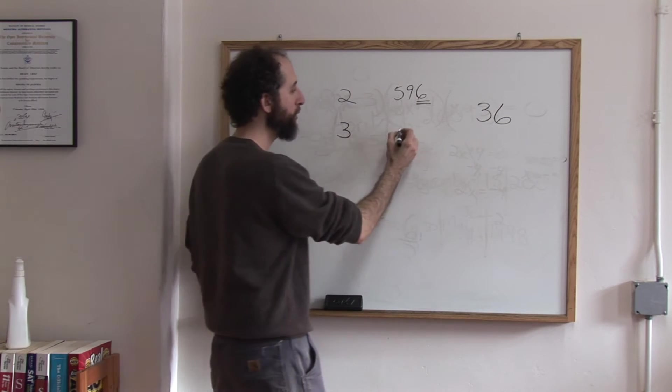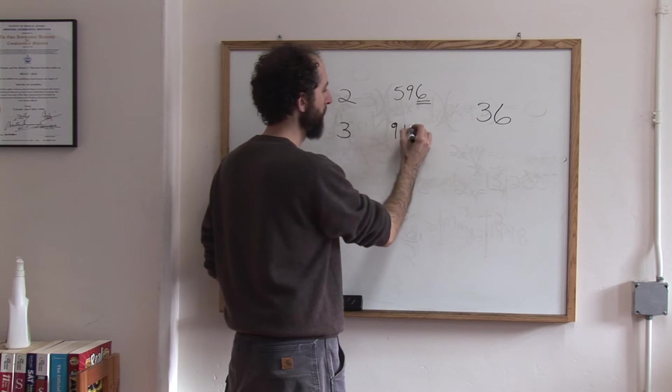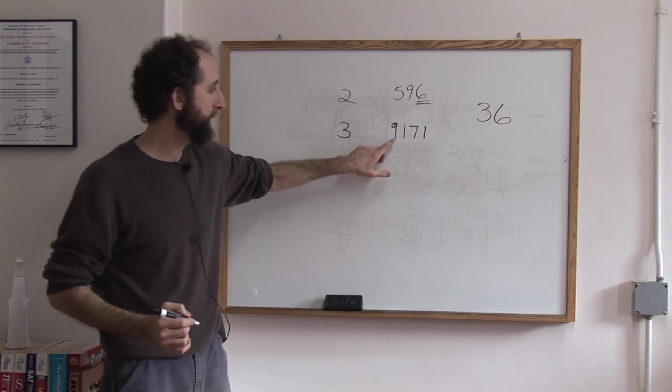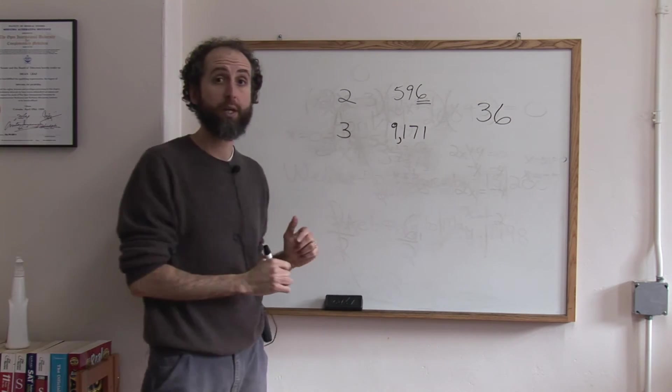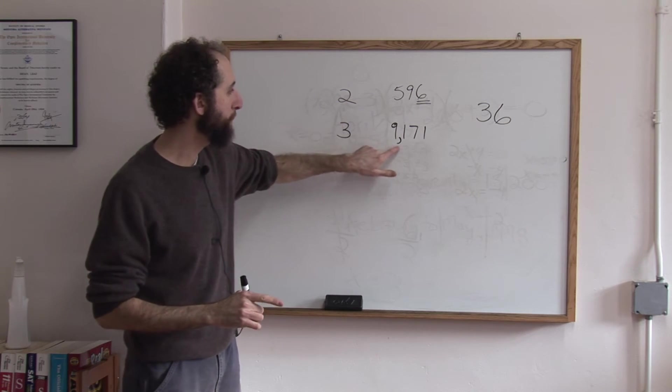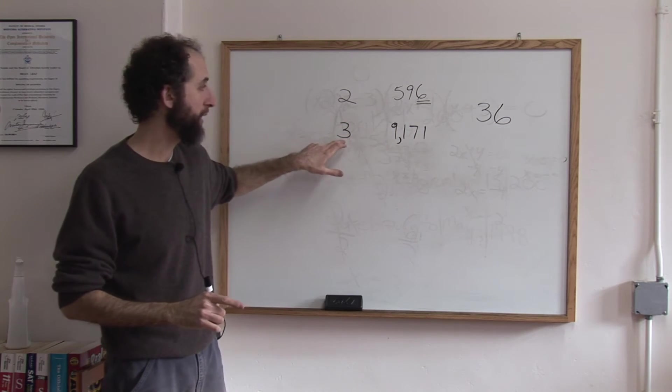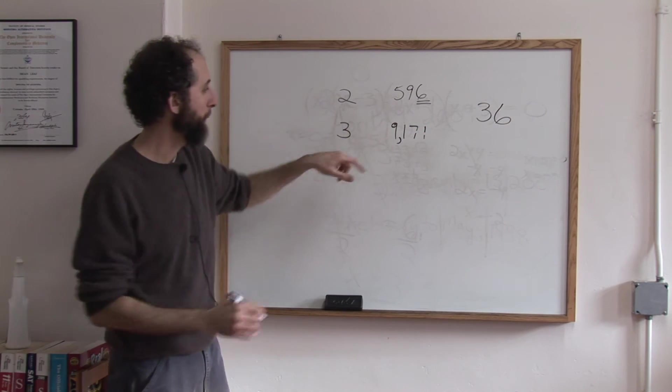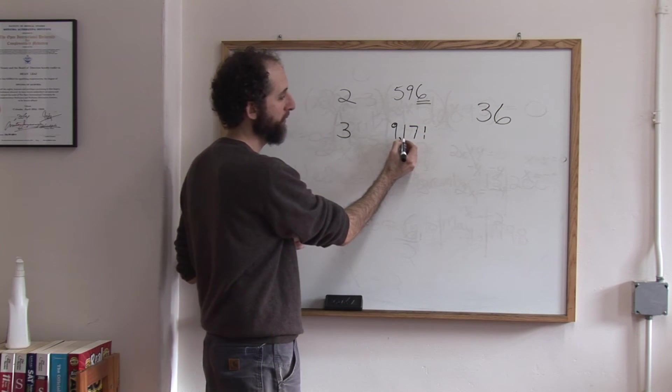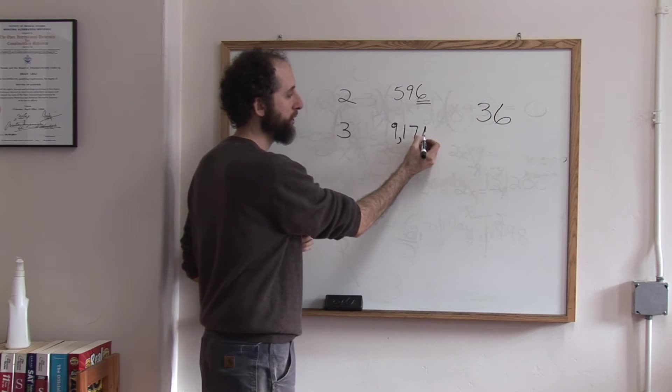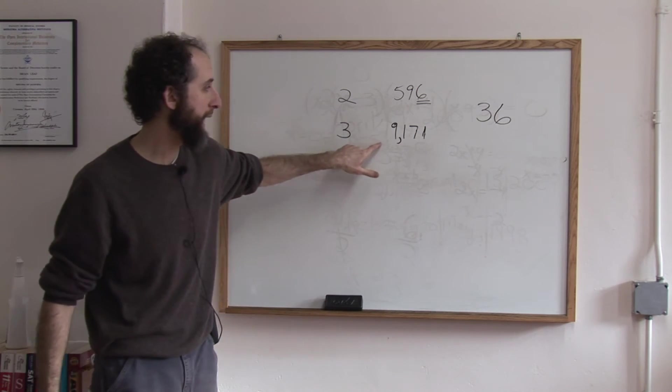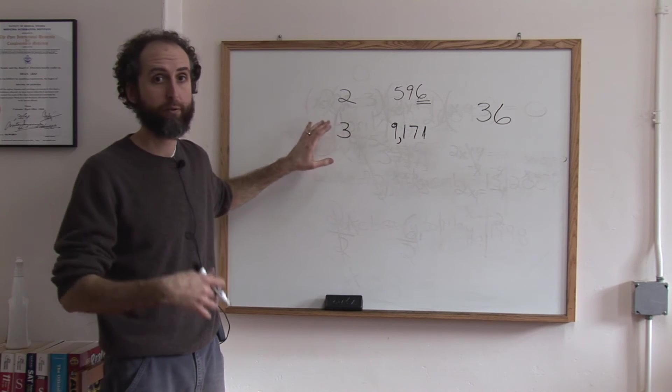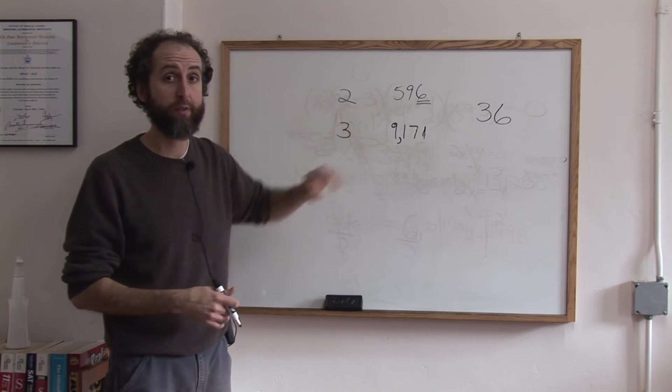3. Any number whose digits, like the number 9,171, if the digits add up to a number that is divisible by 3, then that whole number is divisible by 3. Like, 9 plus 1 is 10, plus 7 is 17, plus 1 is 18. It's a fun little trick. The number 18, the sum of these digits, is divisible by 3. 18 divided by 3 is 6. So this number is divisible by 3.